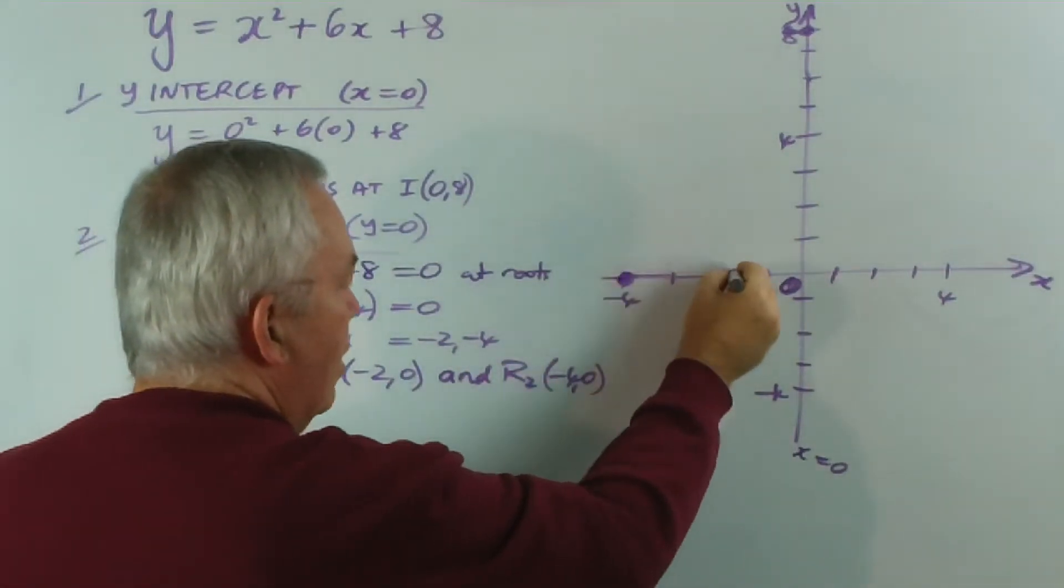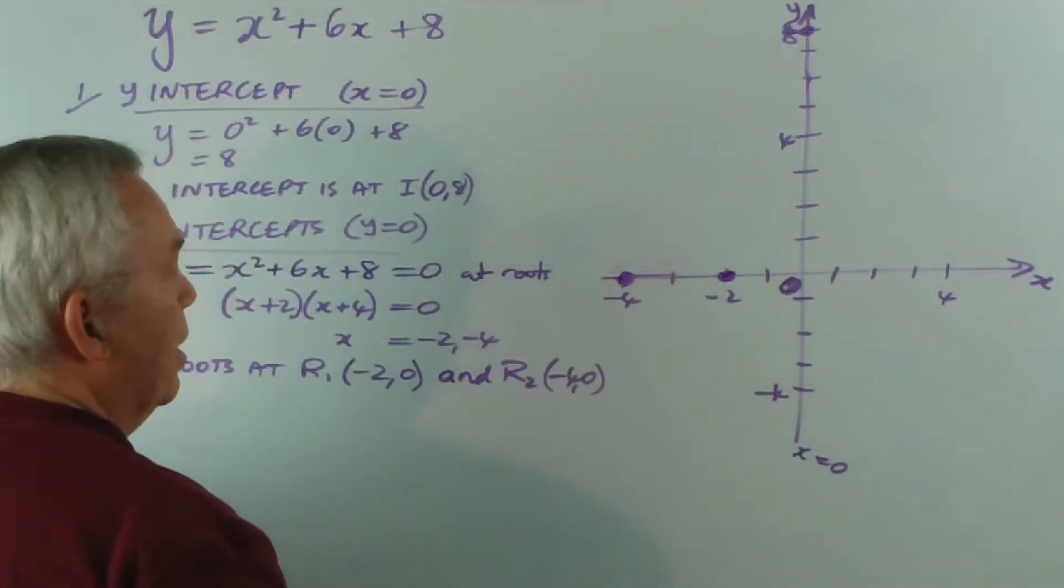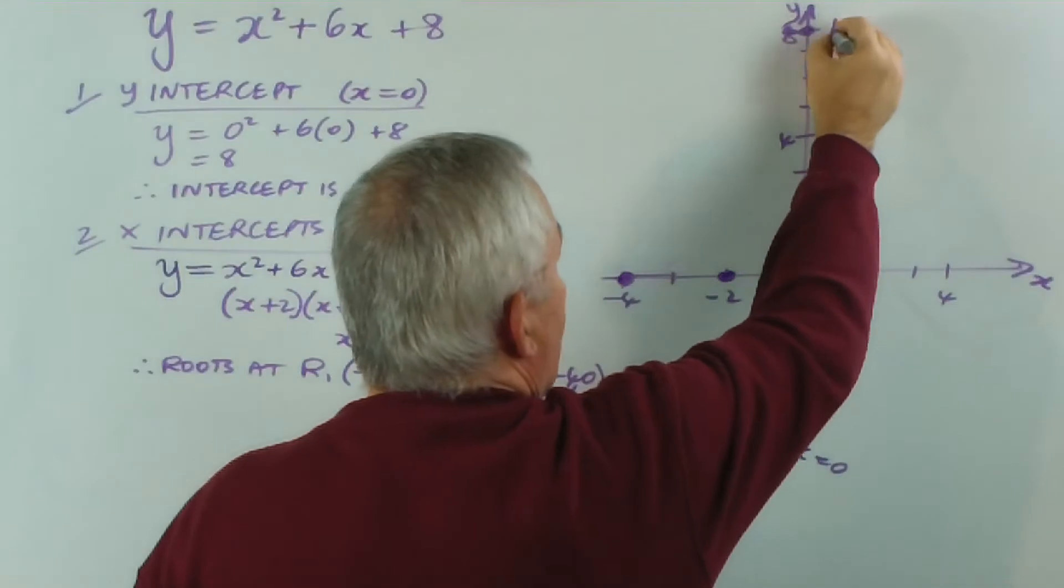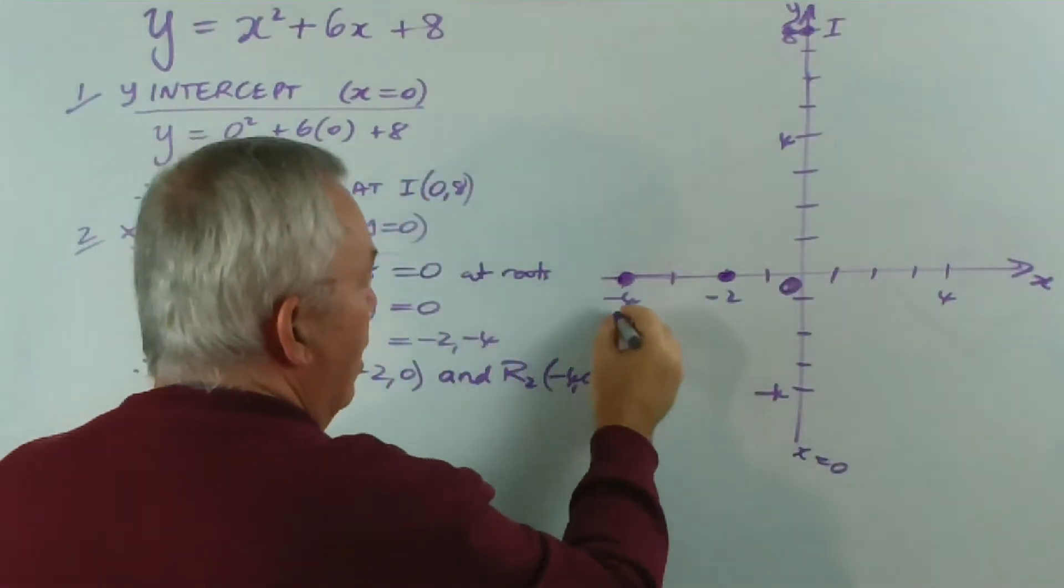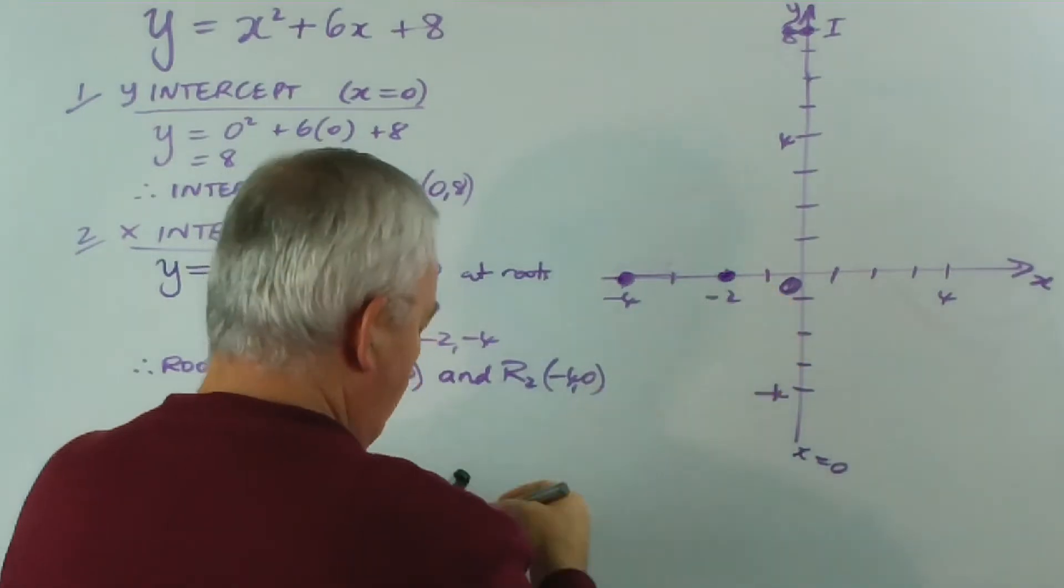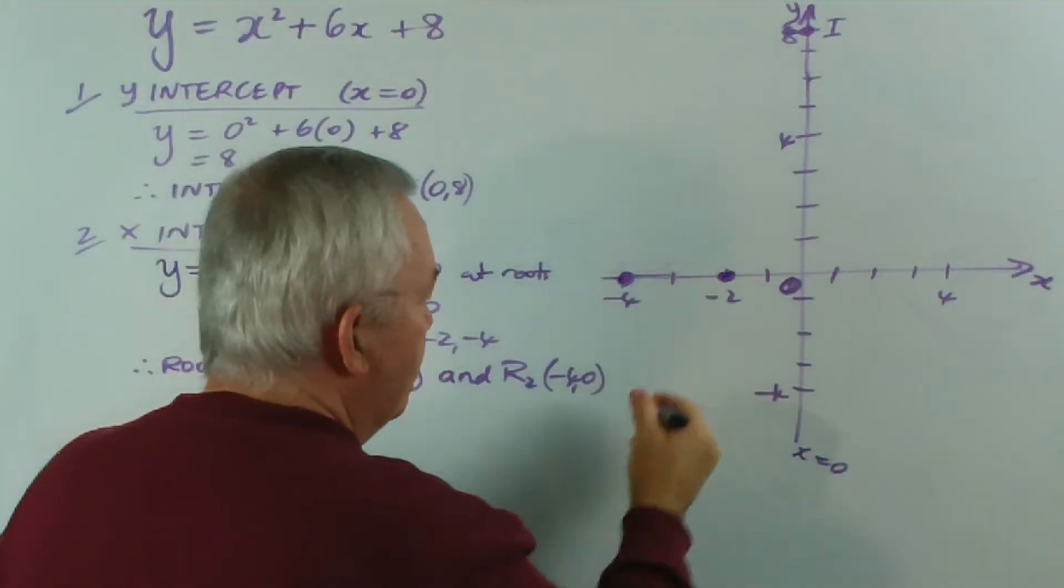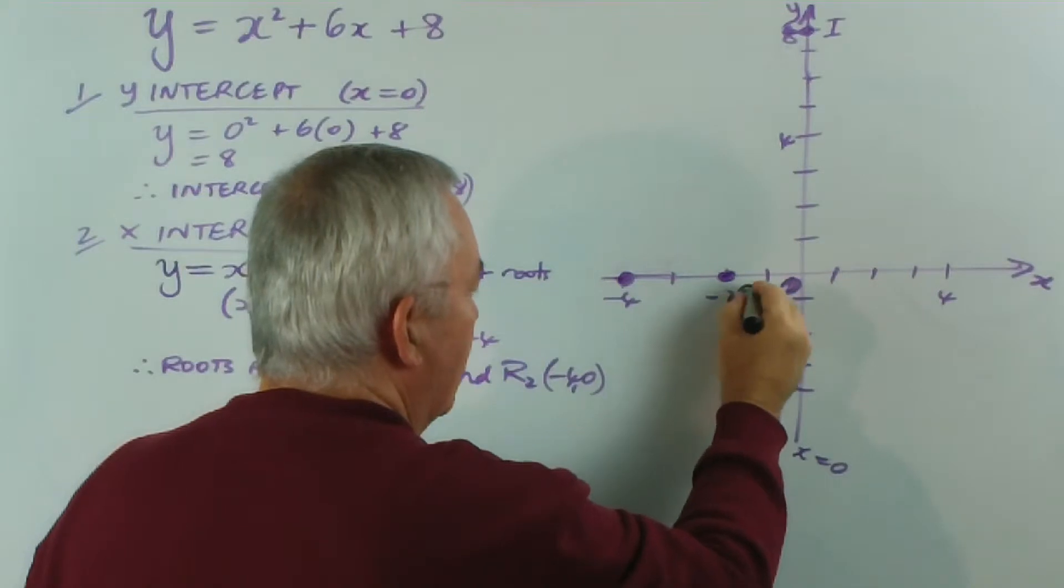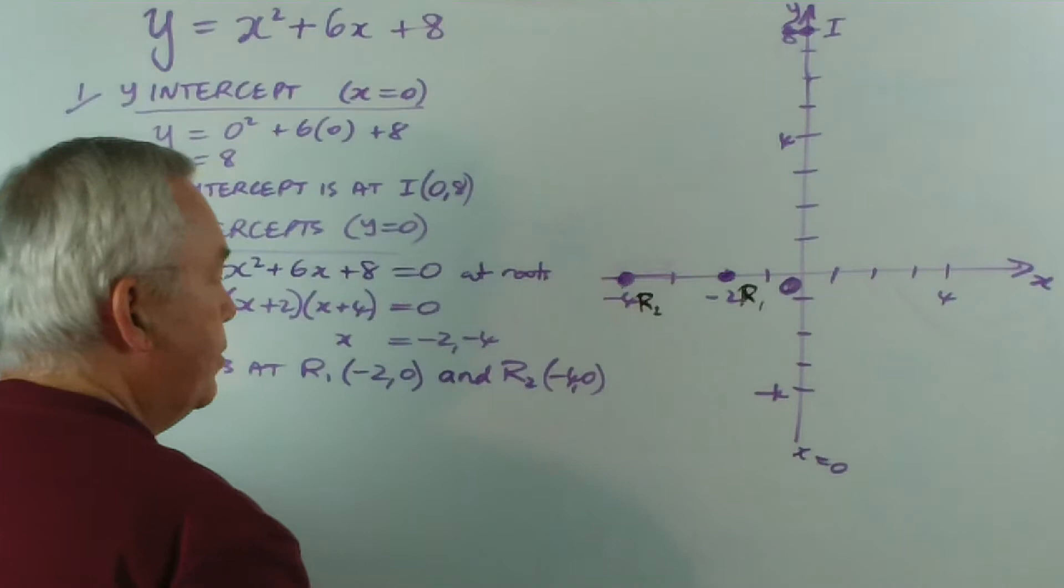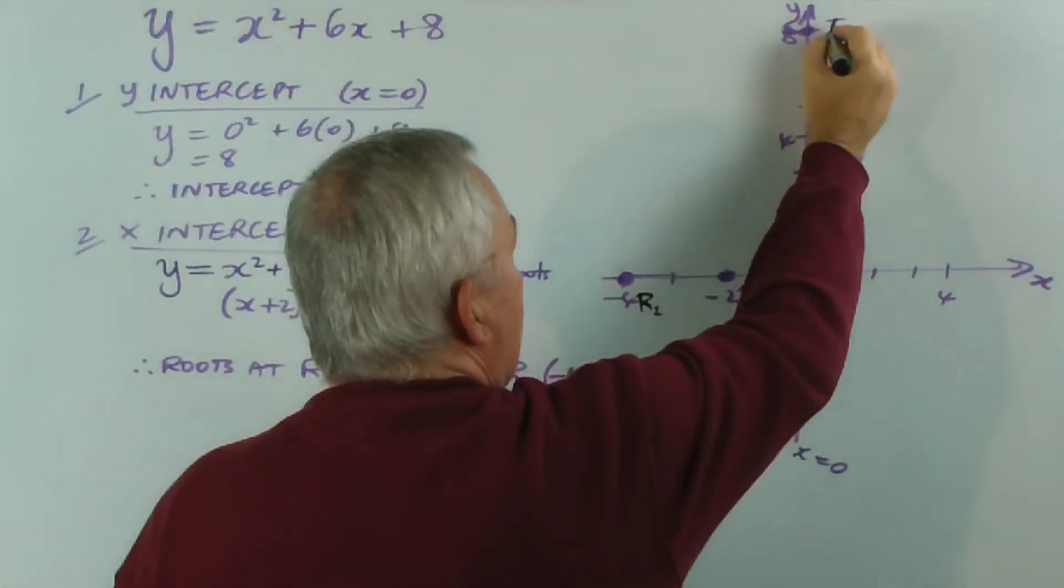On the graph, these two positions. Now the y-intercept we could label with a capital I. And these roots—R1 is at minus two, so I'll write R1 and R2—I'll do that in black.